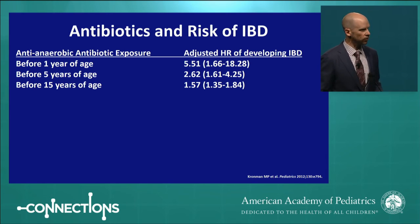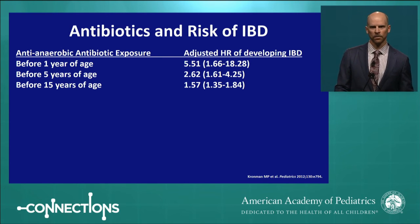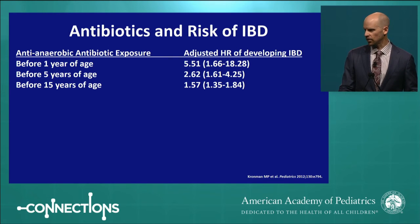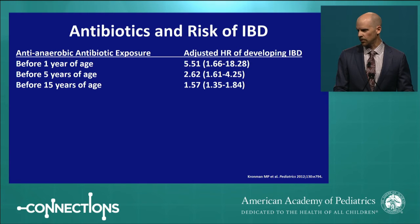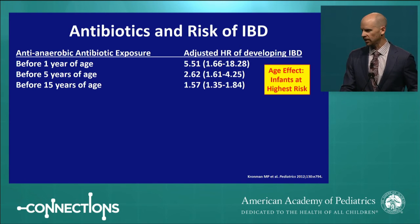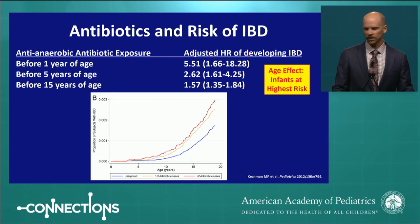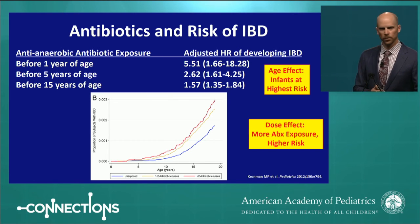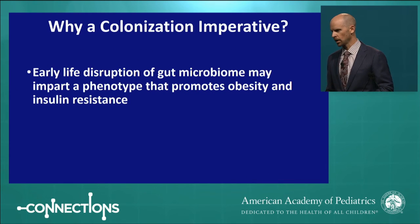It's not just allergic disease — also autoimmune diseases such as inflammatory bowel disease. A study published four years ago looked at the risk of developing IBD based on antibiotic exposure during childhood. That risk was highest with antibiotics taken before one year of age, conferring greater than five-fold risk of developing IBD later in life. The risk was attenuated the older the children were when they received antibiotics. This is an age effect — infants are at highest risk because immune system education is developmentally timed. There was also a dose effect, with more than two antibiotic courses during childhood conferring higher IBD risk.